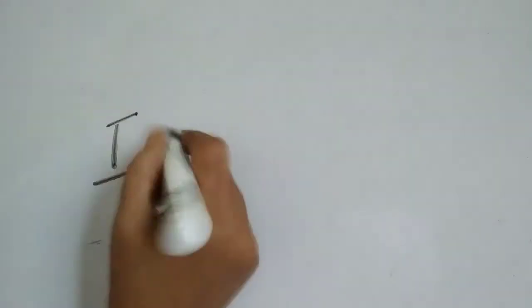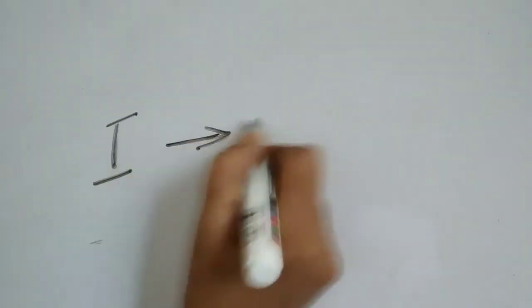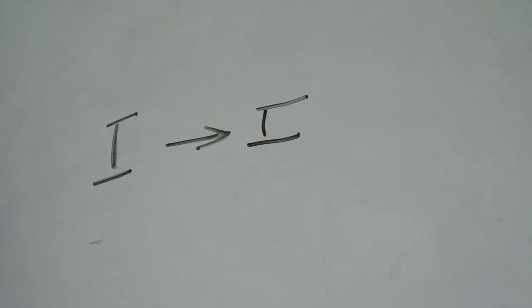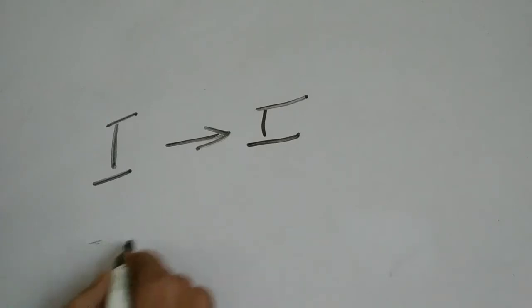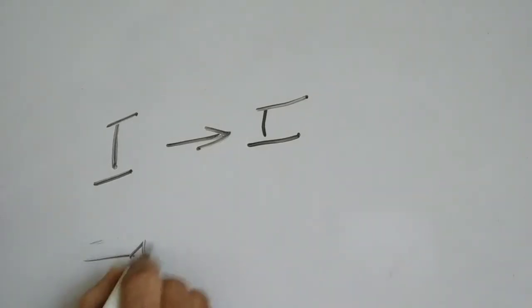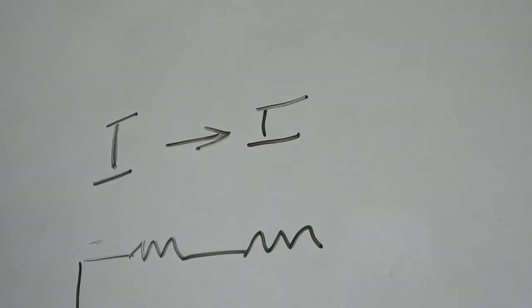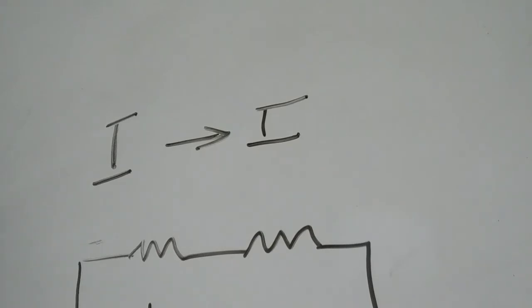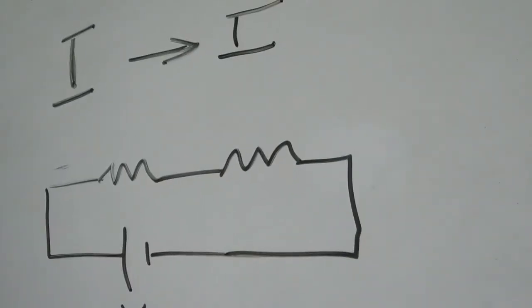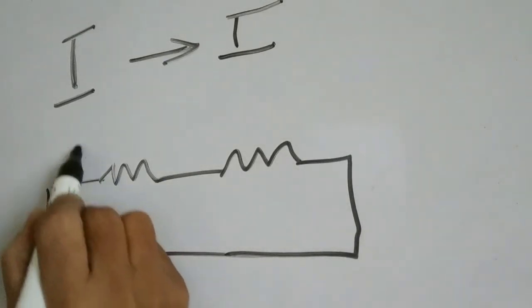That means the current flowing through a series circuit will always be the same. If I is the current flowing through the circuit, it will be I itself throughout the circuit. But if you take a voltmeter, here this is the first resistor and this is the second resistor.